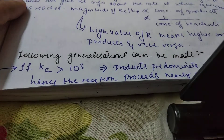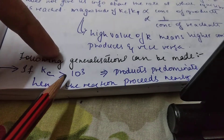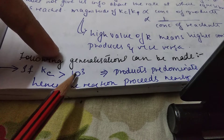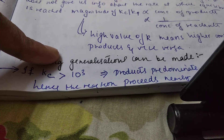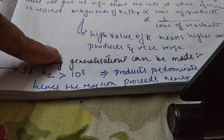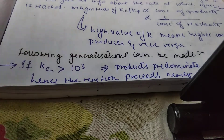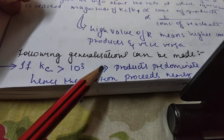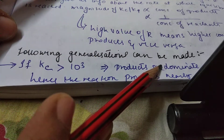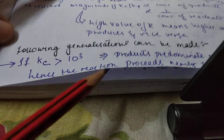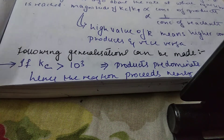The following generalizations can be made: if Kc is greater than 10³, the products predominate over reactants, and hence the reaction proceeds nearly to completion.